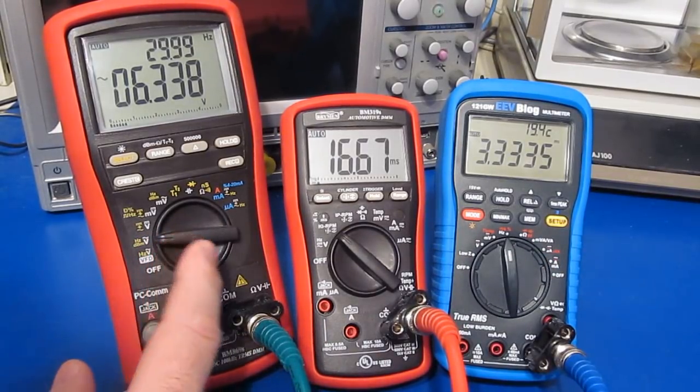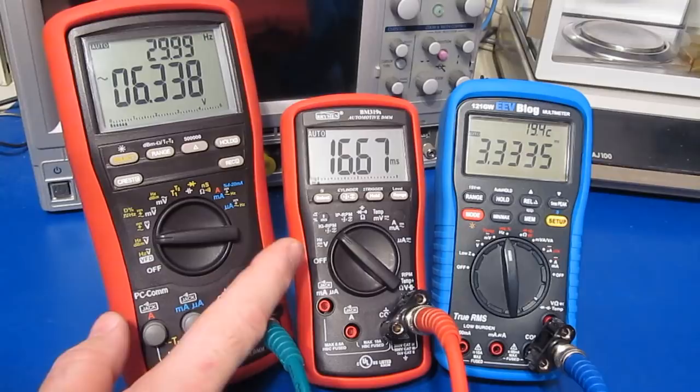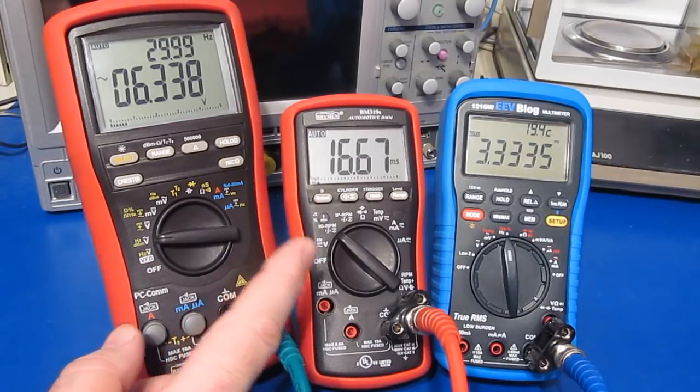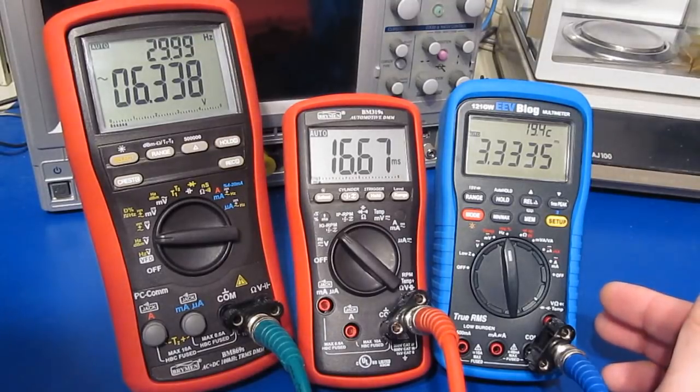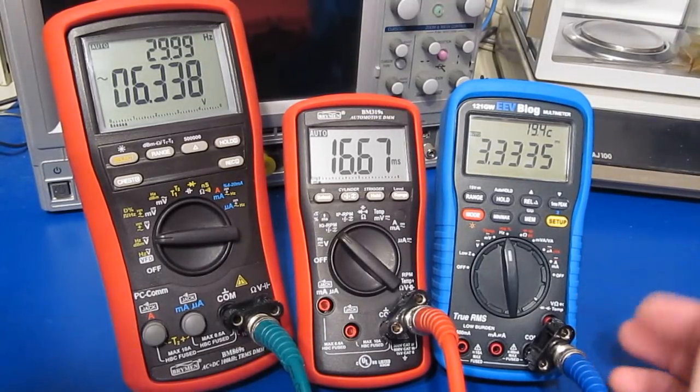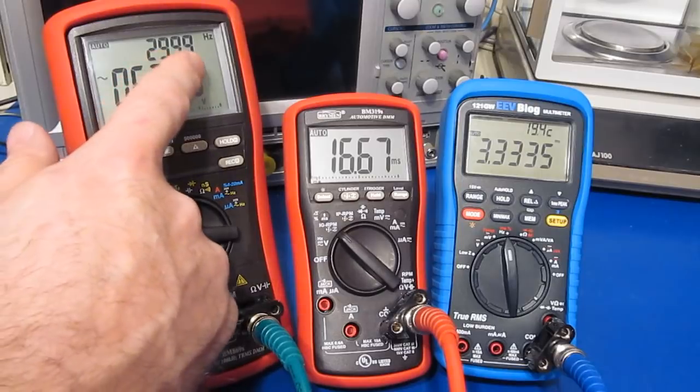On the far left you can see I have the Brayman BM869S. In the center the Brayman BM319S and this is an automotive meter. And then on the far right I have the UEI pre-production meter. You can see we're outputting roughly a 30 Hertz waveform and it's at about 6 volts.